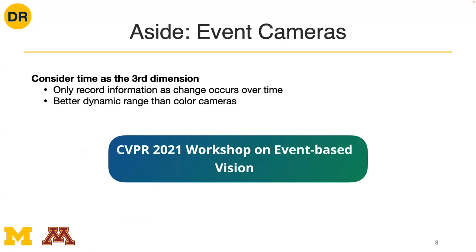Event cameras also have microsecond-level frame rates - they're way faster than RGB cameras, which may partly be due to the sparsity meaning less data to transmit. Event cameras are closer to our optical systems than RGB cameras are, and there's a growing set of works using deep neural networks with event cameras. There's a paper from a group at ETH Zurich that really specializes in event cameras - I'd recommend focusing on their papers first and then branching out.